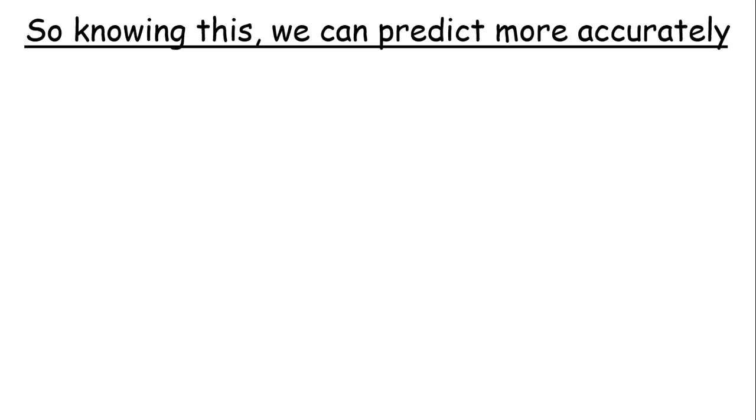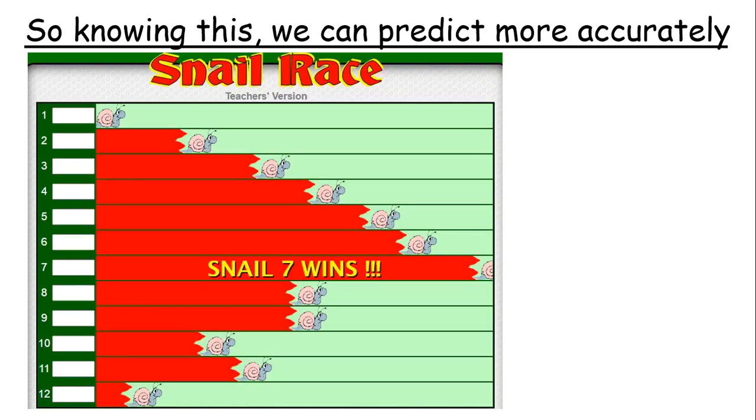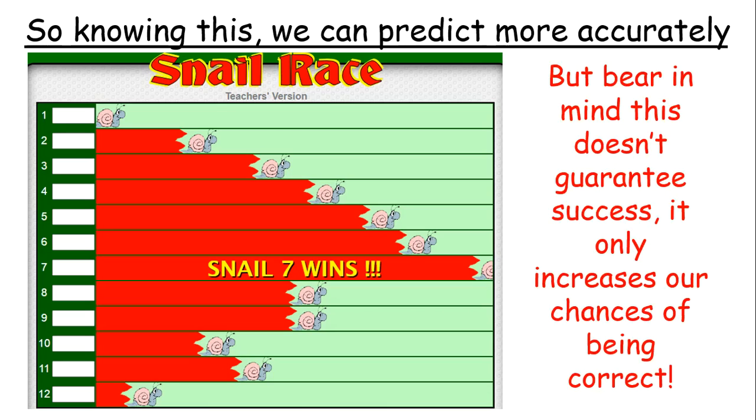Okay, so knowing this, and knowing how to create sample space diagrams, we can predict more accurately what's going to happen. So, we might know that snails 7 is going to win 1/6th of the time, which is significantly more than snail number 1 and snail number 12. But bear in mind, this doesn't guarantee success. So, if you're playing games like this, we can use probability to make more accurate predictions, but it doesn't guarantee that that outcome will happen.